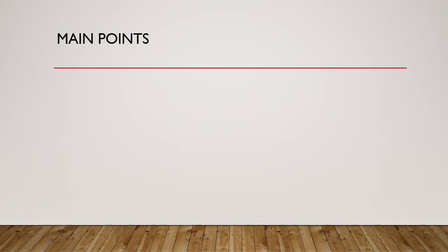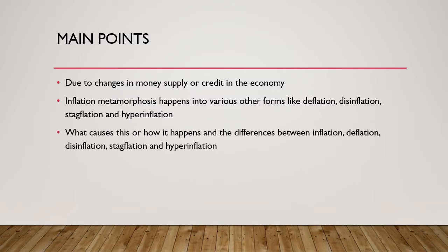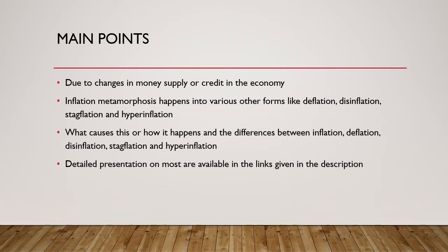The main points of this presentation are going to be: how changes in money supply or credit happen in the economy. We shall discuss in the most comprehensive way how inflation metamorphosis happens into various other forms like inflation, deflation, stagflation, hyperinflation, and disinflation. We shall see what are the causes of them and the differences between these forms. A detailed presentation on almost all of them are available and the links would be given in the description of this presentation.